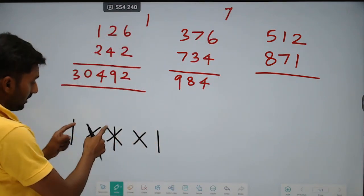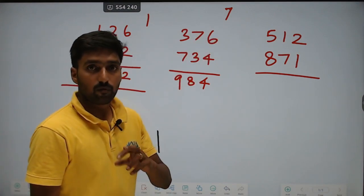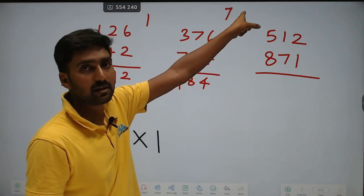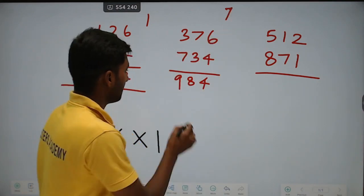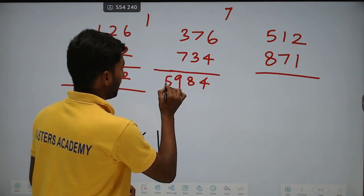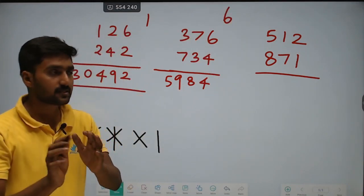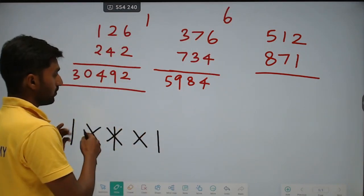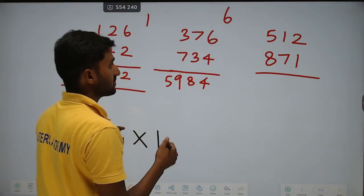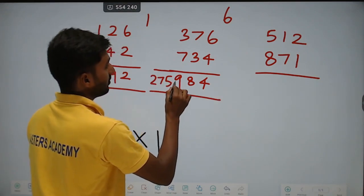Star, then again cross: 3 into 3 is 9, plus 7 into 7 is 49. So 9 plus 49 is 58, plus carry 7 is 65. Write 5, carry 6. Next cross, then straight: in the straight, 3 into 7 is 21, plus 6 is equal to 27. Result digits: 2, 7, 5, 9, 8, 4.